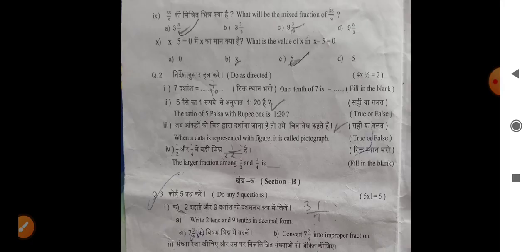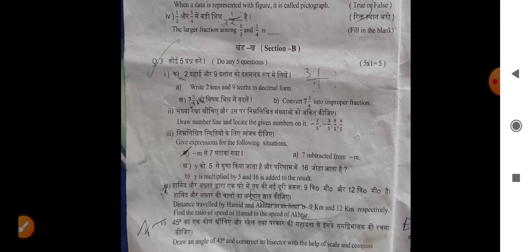When data is represented with figures it is called pictograph. The larger fraction among 1.2 and 1.4 is. Question 3.